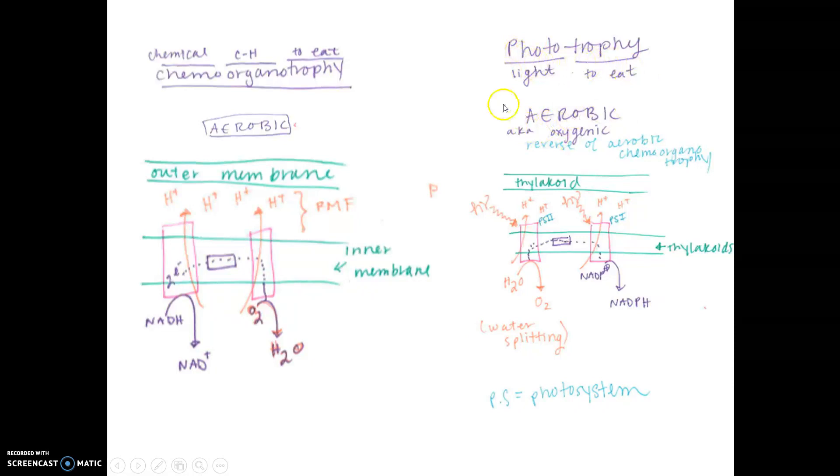For photosynthesis, we're in an aerobic environment with oxygen. What's providing our electrons is water, which means we need energy to split this water and release those electrons. We have proteins, electron carriers, and end with NADPH.